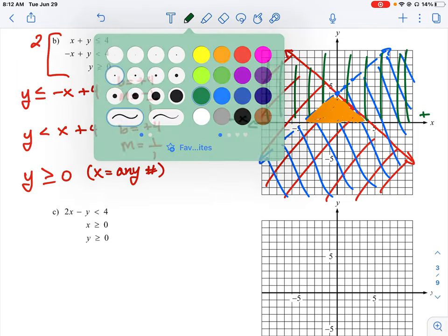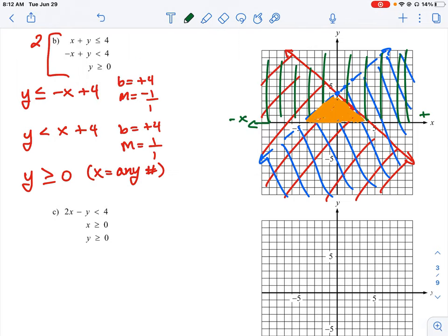And I think the only last thing I should point out here is when it says y is greater than or equal to zero because that's a greater than or equal to sign. We should actually put in a solid line along the x-axis to indicate that it's a solid boundary, just like that.